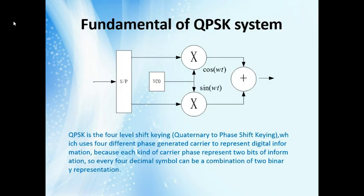Now for the fundamentals of the QPSK system. As the picture shows, QPSK is a four-level phase-shift keying scheme which uses four different phase-generated carriers to present digital information. Because each carrier phase represents two bits of information, every single symbol can be a combination of two binary representations.